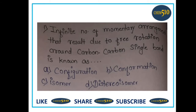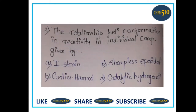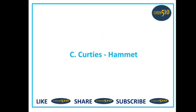The infinite number of momentary arrangements that result due to free rotation around a carbon-carbon single bond is known as conformation, so option B is correct. Second question: the relationship between conformation and reactivity in an individual compound is given by: a) I-strain, b) Sharpless epoxidation, c) Curtin-Hammett, or d) catalytic hydrogenation. The answer is Curtin-Hammett, so option C is correct.